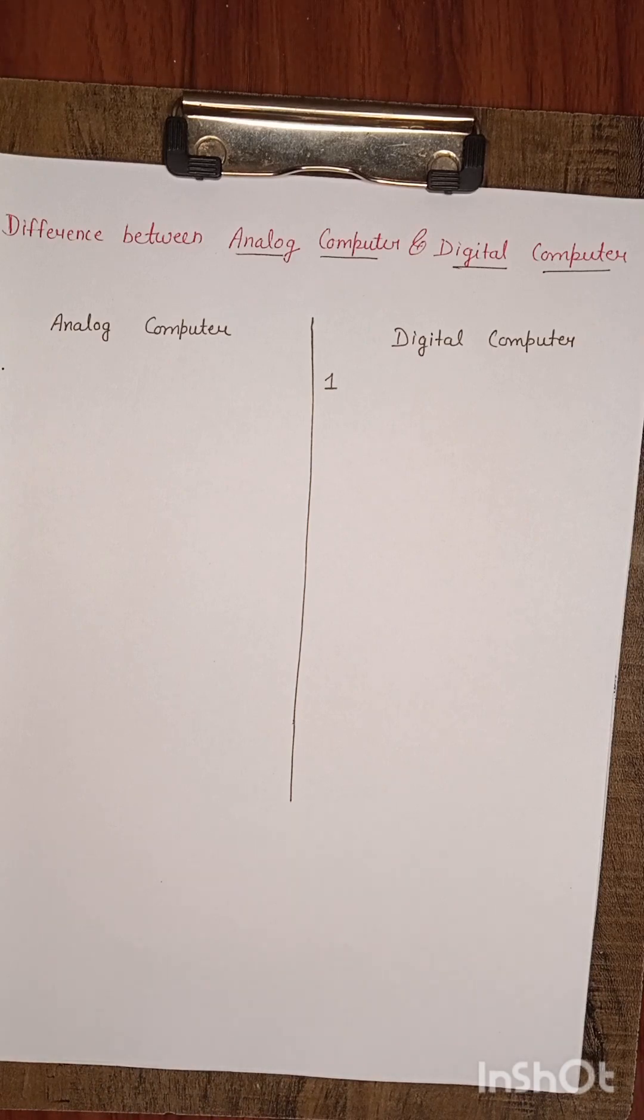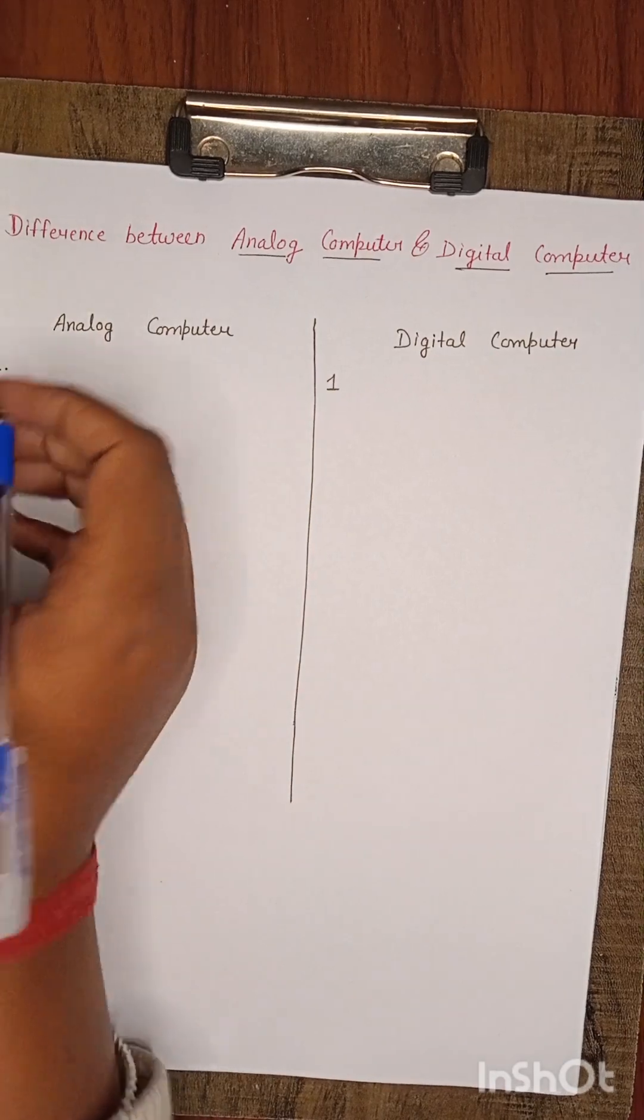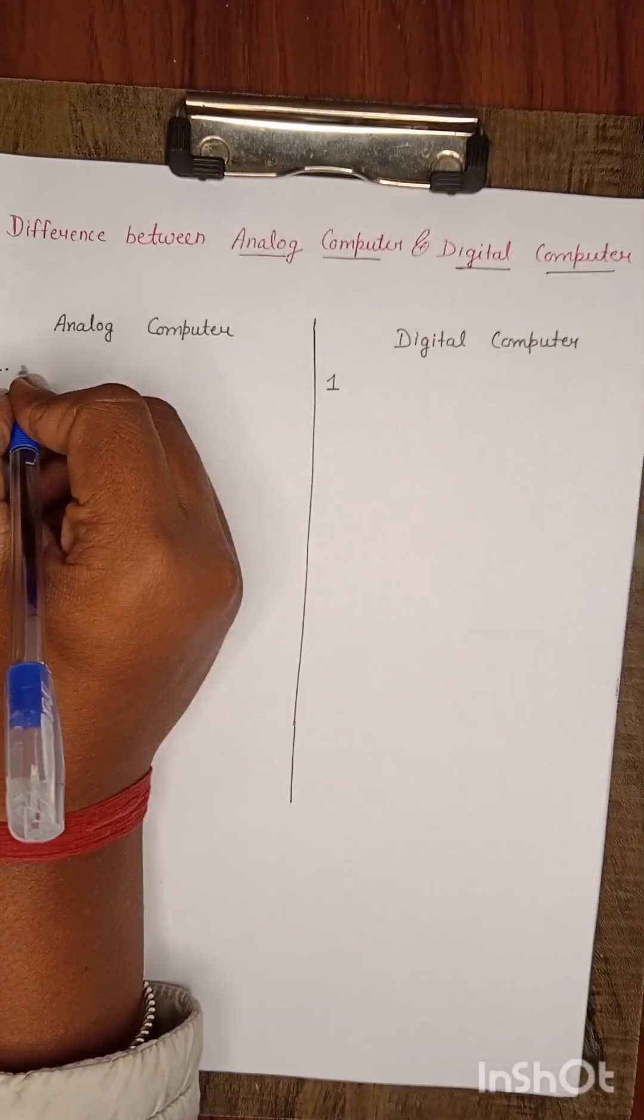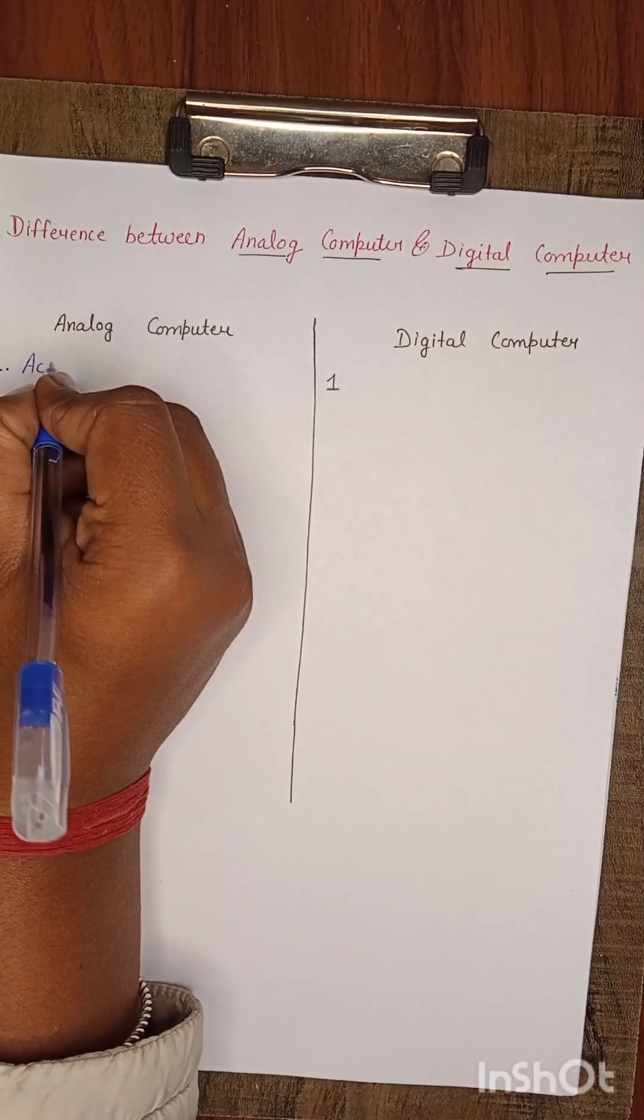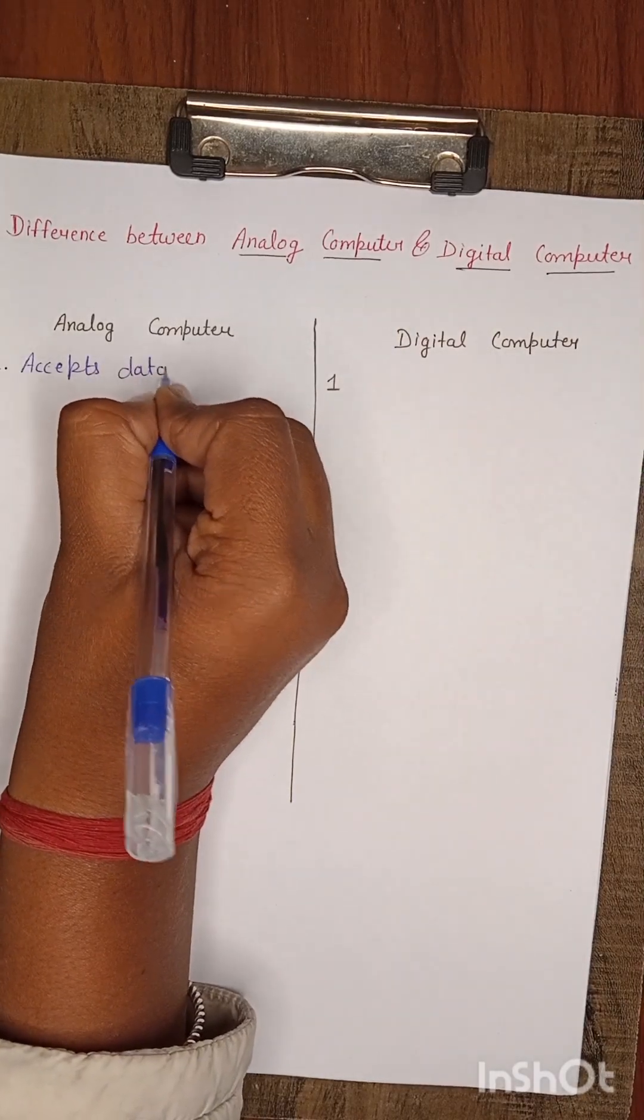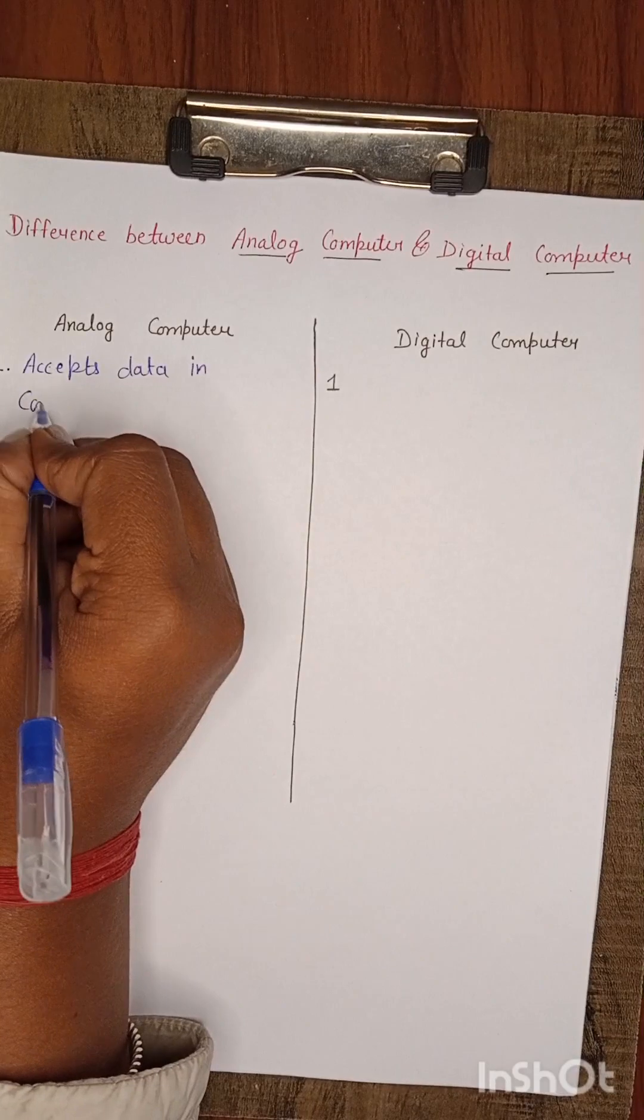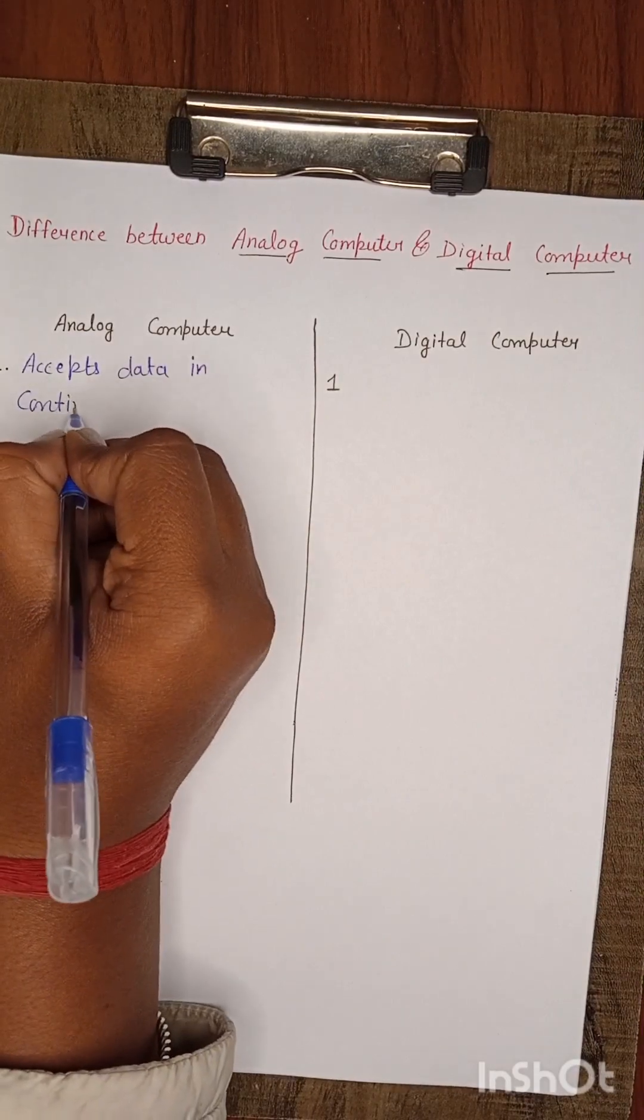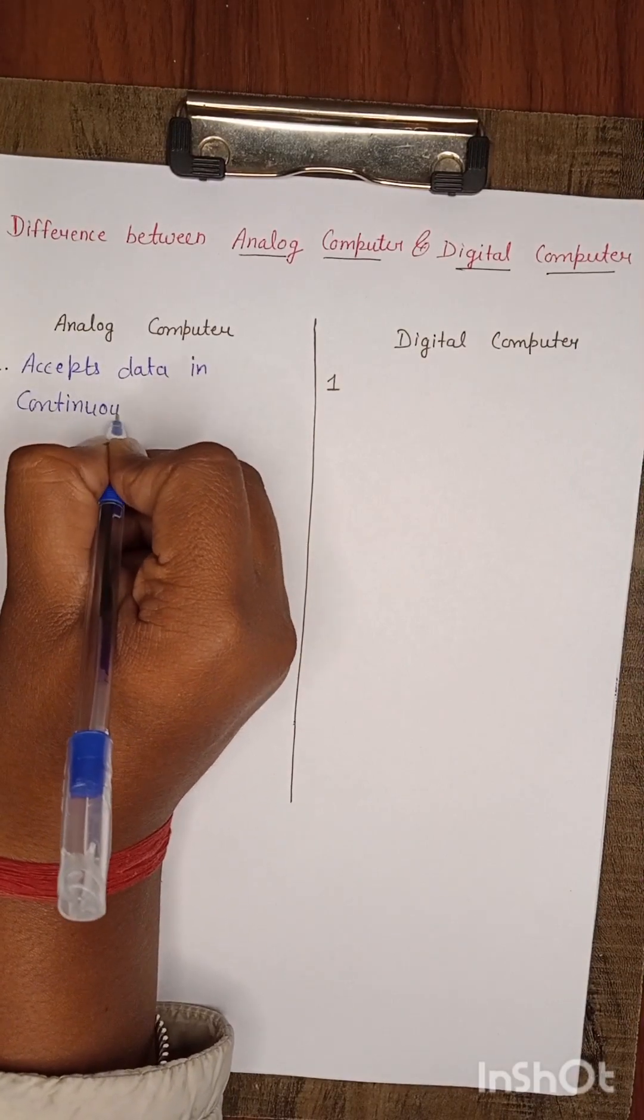We will see the differences between both of them. First is Analog Computer. It accepts data in continuous form.